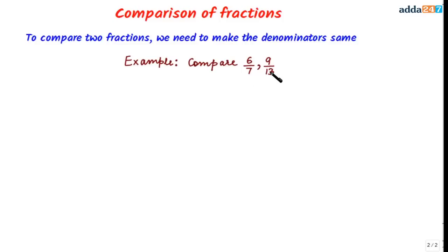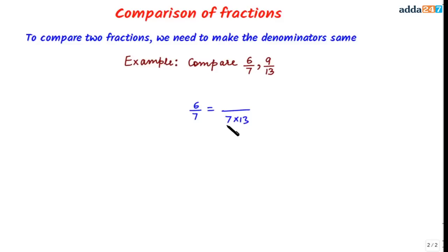Let's compare 6/7 and 9/13. Let's make the denominator the same first. For 6/7, we will multiply 7 by 13, and when multiplying the denominator by 13, we must also multiply the numerator by 13. This gives us 6 × 13 = 78 and 7 × 13 = 91, so 6/7 becomes 78/91.